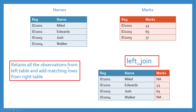It retains all the observations from the left table and matches the relevant observations from the right-hand table. So we get the marks, and where there were no marks in the right-hand table, we get a missing value. What about ID 105? This is present in the marks table but not in the names table, so it would be left out — we just focus on the left table.